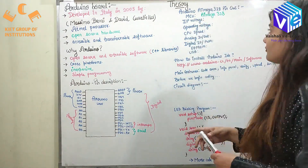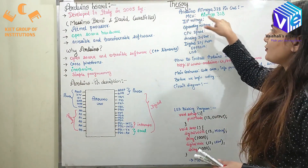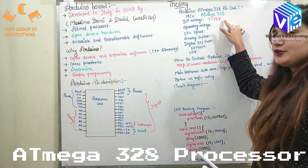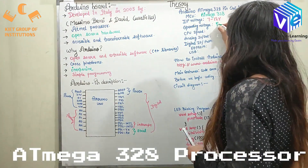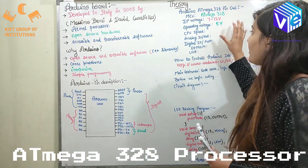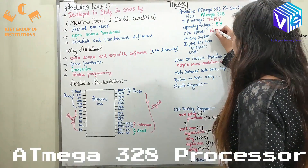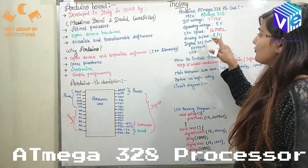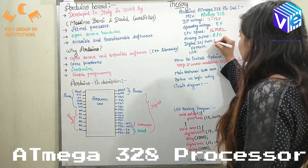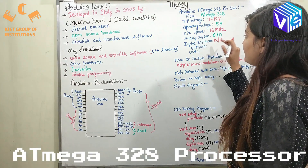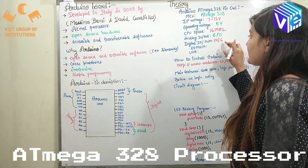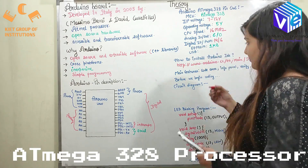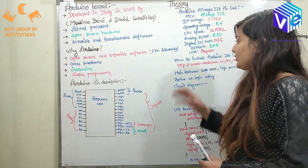The microcontroller unit is the ATmega328. The input/output voltage is from 7 to 12 volts. The operating voltage is 5 volts. The CPU speed is 16 megahertz. The analog input versus output are 6 versus 0. The digital input/output versus pulse-width modulated pins are 14 versus 6. The electrically erasable programmable ROM is 1 KB. After that we have a regular USB here.